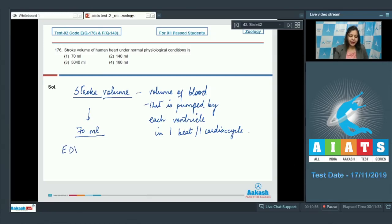The end diastolic volume, that is the volume of blood present in ventricles after diastole, was 120 ml. And at the end of systole it is about 50 ml, which means that 70 ml of blood has been pumped by each ventricle. So this is the correct answer, option number three.